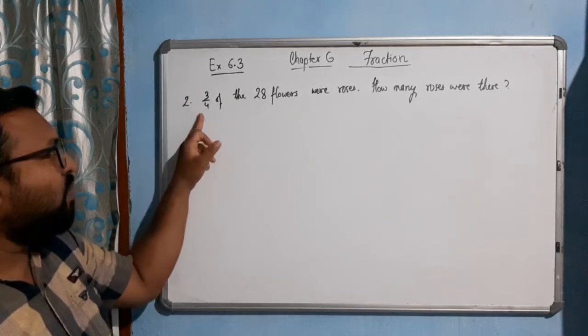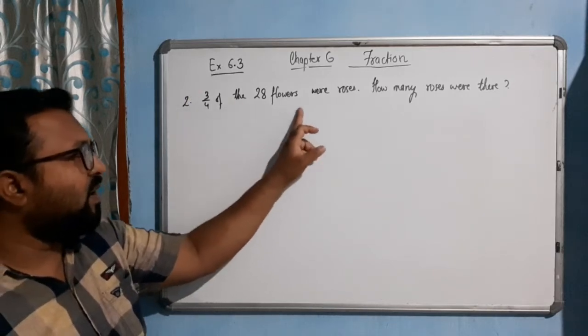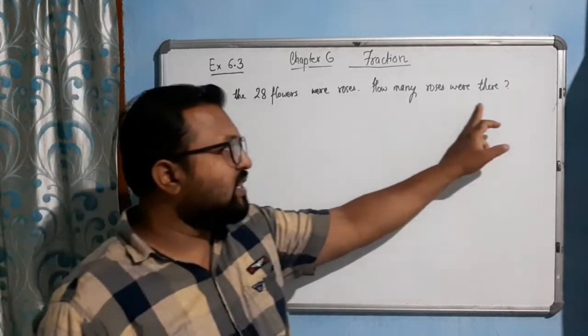Now here in question number two it says, three by four of the twenty-eight flowers were roses. How many roses were there?